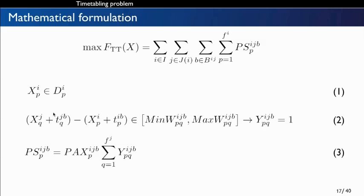The mathematical formulation for the timetabling problem maximizes the number of passengers benefiting from well-timed transfers, subject to almost-regular services. We have feasible departure time windows for each trip guaranteeing this almost-regular service, constraints for activating the binary variables, and a constraint defining the variable that counts the number of passengers with well-timed transfers. This is the timetabling problem, focused only on passenger transfers.